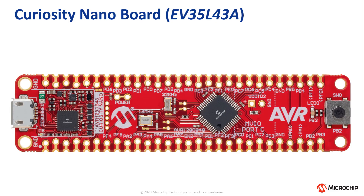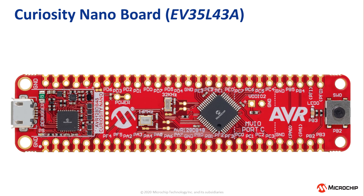Now that the software has been created, the Curiosity Nano must be modified to separate MVIO from the main power supply. To do this, resistor R204 must be disconnected. Just above this resistor is J212, which is an unpopulated MVIO power supply header. It is recommended to solder a pin header to these pins. Next, the opamp power supply needs to be connected to the MVIO supply. The code example uses opamp0, which outputs on pin RD2. Connect a wire from this pin to the MVIO power supply.